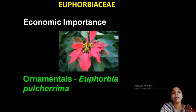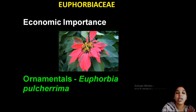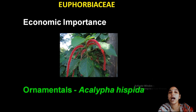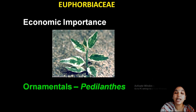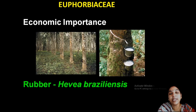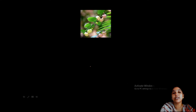Common ornamental plants include Euphorbia pulcherrima — with cyathium inflorescence and colored leaves — very familiar in gardens. Euphorbia milii is also a very common ornamental plant. Acalypha hispida — poochawali — is another common ornamental. Pedilanthus shows oblique cyathium. Rubber — Hevea brasiliensis — is highly economically important; it yields latex used for many purposes.